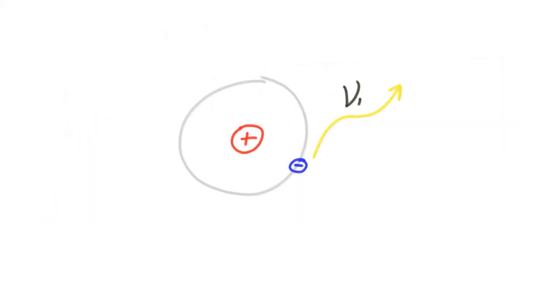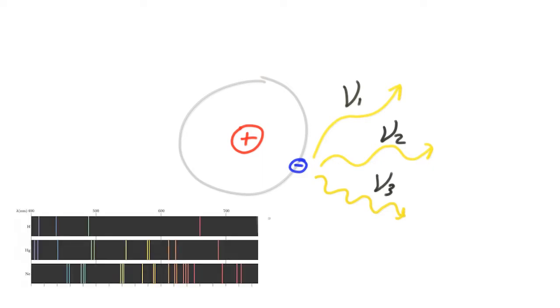For example, an atom can emit a photon of frequency nu1 or nu2, but it cannot emit something in between, like greater than nu1 and less than nu2. The emission spectrum of each atom is unique, just like our fingerprints. This is how we know the chemical composition of distant stars. The light carries all the information.